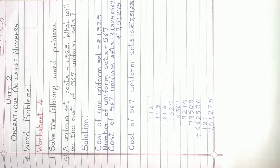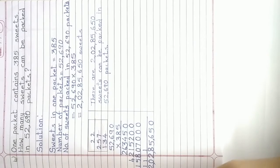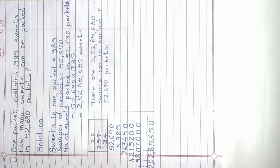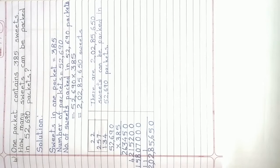Do the multiplication like this. No one should do the multiplication in front of the statement. Let's solve the next question. Question number B: One packet contains 385 sweets.